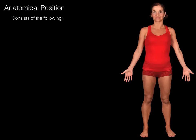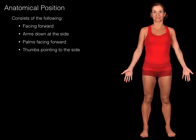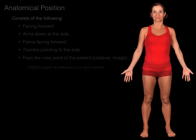The anatomical position consists of the following: the patient's facing forward, the arms are down at the side, the palms of the hand are facing forward with the thumbs pointing to the side, and it's always from the viewpoint of the patient or the cadaver or the image or the figure. So the anatomical position becomes an initial point of reference to accurately describe location and direction.